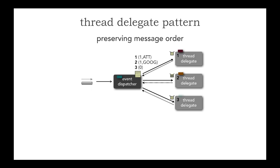An Apple trade comes in, and it gets sent to thread three. Then — watch this — thread two finishes. It calls back to the event dispatcher saying it's done, and the event dispatcher removes Google from the allocation map, with the message count back to zero. A trade for IBM comes in. We check: is anybody processing IBM? No. So we allocate it to thread two, because that's the least used.